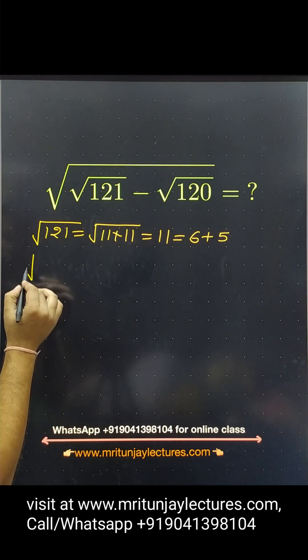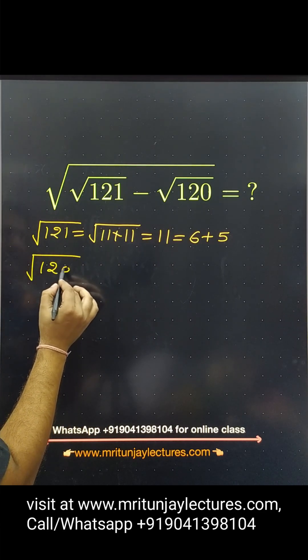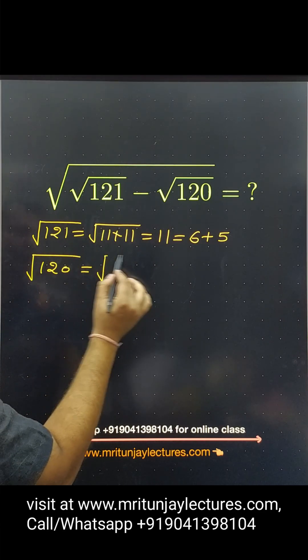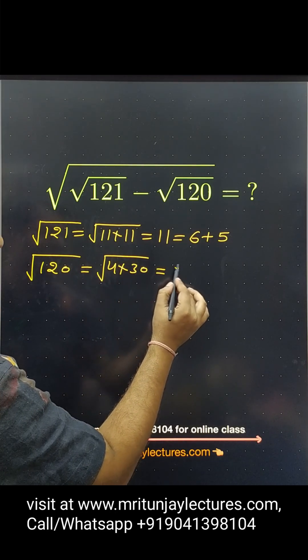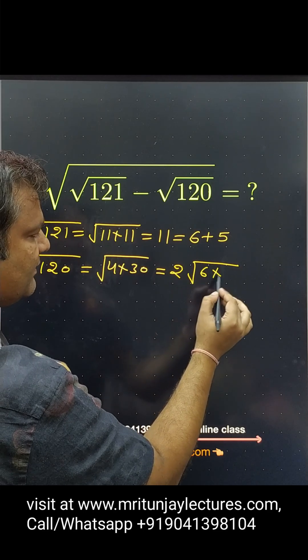Now, that value √120 is written as 4 into 30. So, then 2, 30 is also written as 6 into 5.